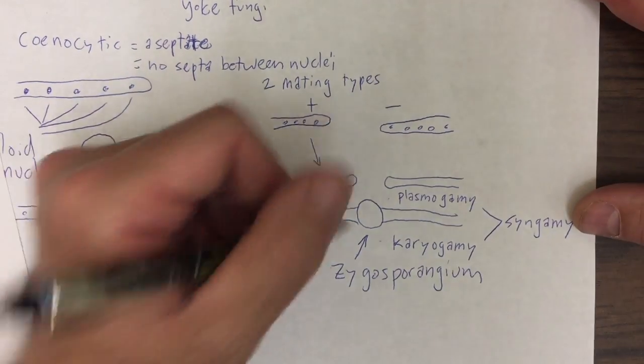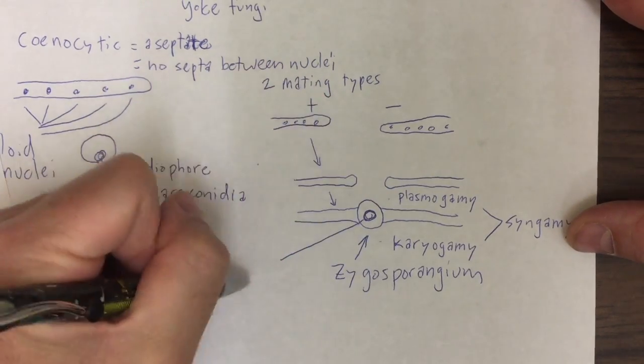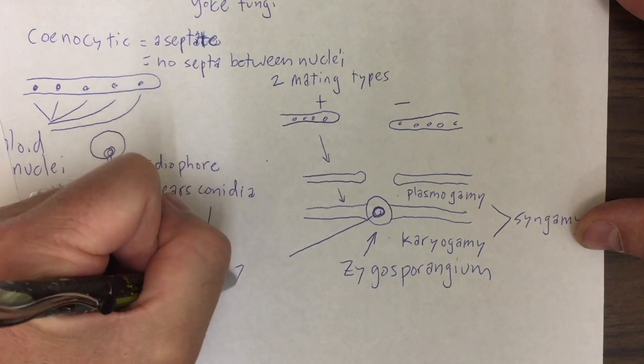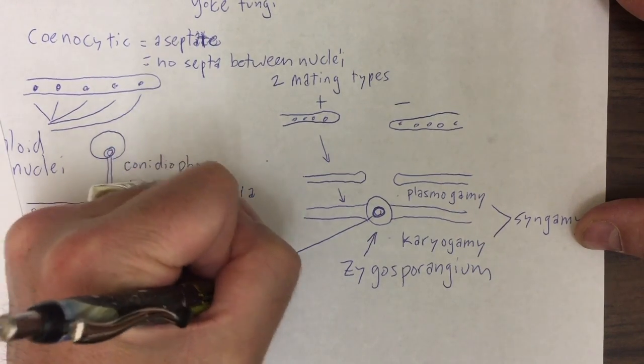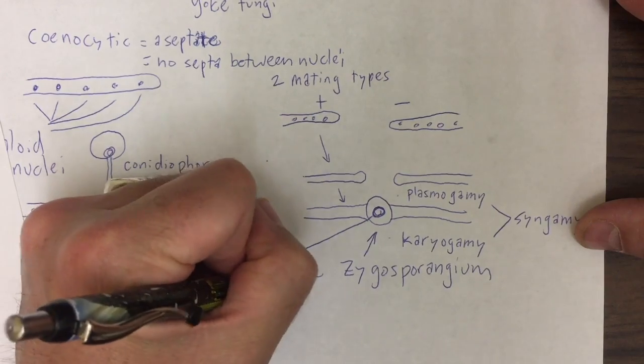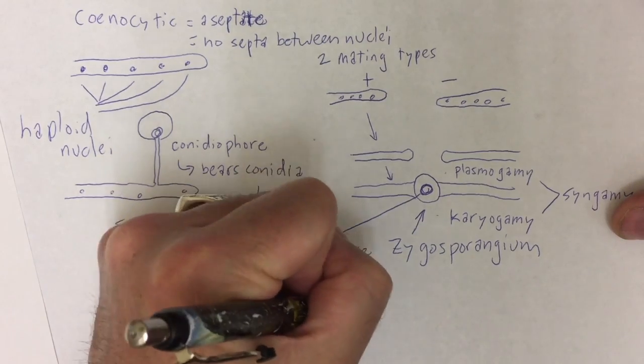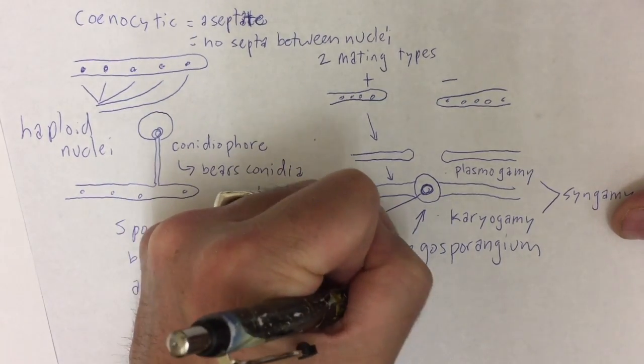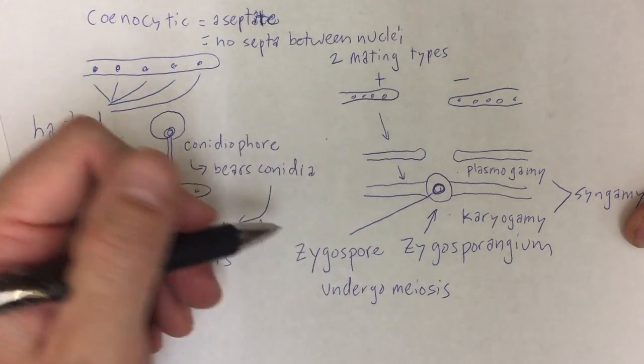So within the zygosporangium, we produce that single diploid nucleus, the zygote. In this case, the zygote is called a zygospore. That will undergo meiosis to restore haploid condition.